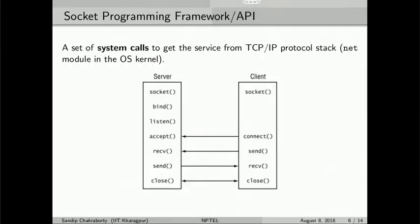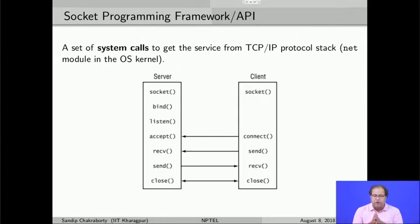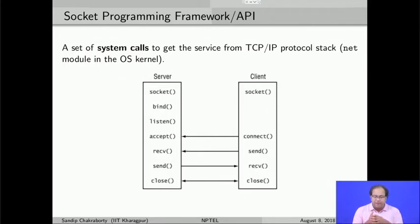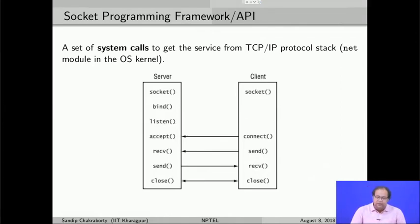These logical pipes, called sockets, create end-to-end connections in case of TCP, or end-to-end data transmission semantics in case of UDP, to transfer data from one process on one machine to another process on another machine. Let us see how we can implement such a socket in a Unix-based system using the concept of socket programming. In a socket programming framework, we have a set of system calls that we can execute from a C program, and these system calls get service from the TCP/IP protocol stack implemented inside the net module of the Unix kernel. At the transport layer, we talk about a client-server based programming model.